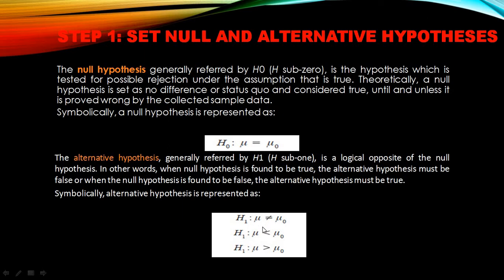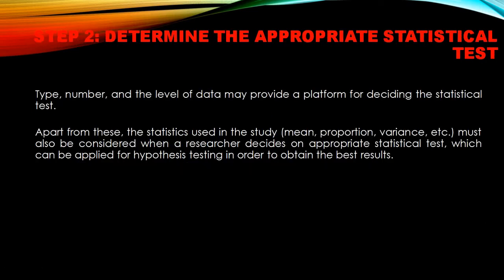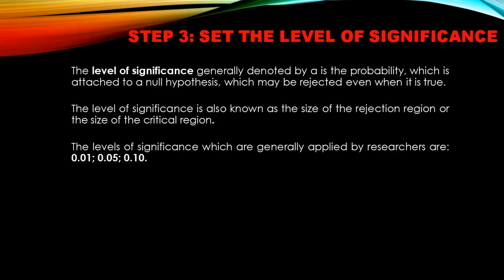When the alternate hypothesis is 'not equal to,' it could be less than or greater than — we'll discuss this in coming slides. Step two is to determine the appropriate statistical test. What kind of test do I need to apply for my data? Parameters like mean, proportion, and variance help decide which appropriate statistical test to apply.